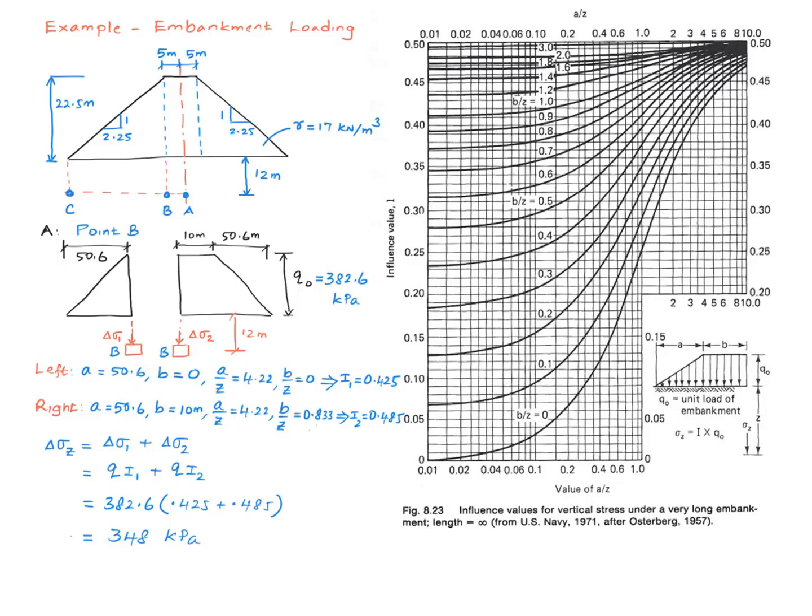For the left part, A is 50.6 according to the definition over here. But basically, there is no uniform part, uniformly loaded part, and therefore B is 0. So you calculate the ratios, go back to the chart, and find your influence value. And I got roughly 0.425.